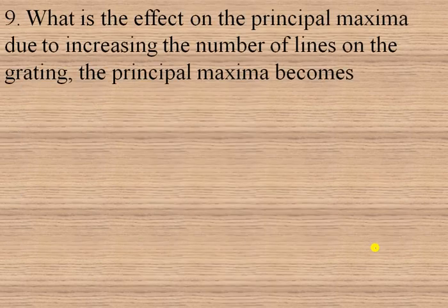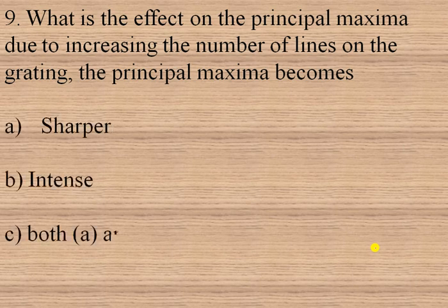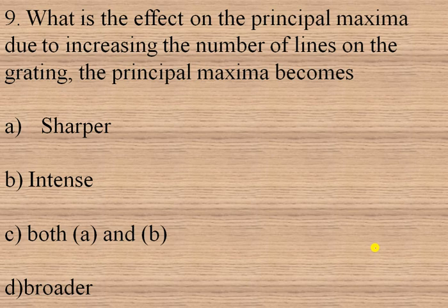The next question is: what is the effect on the principal maxima due to increasing the number of lines on the grating? Options are — the principal maxima becomes sharper, intense, both sharper and intense, or broader. If we increase the number of lines, then the principal maxima becomes sharper and intense. So option C is the right option.